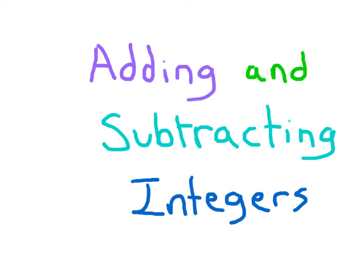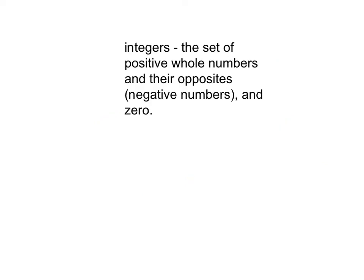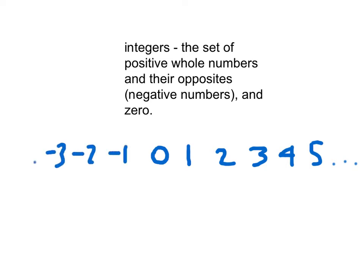In this lesson, we'll learn about adding and subtracting integers. Integers are defined as the set of positive whole numbers and their opposites, which are negative numbers and 0. So we have those positive whole numbers, 1, 2, 3, 4, 5, and it goes on from there. We have 0, and we have the opposite of those whole numbers: negative 1, negative 2, negative 3, and so forth. So those are integers.